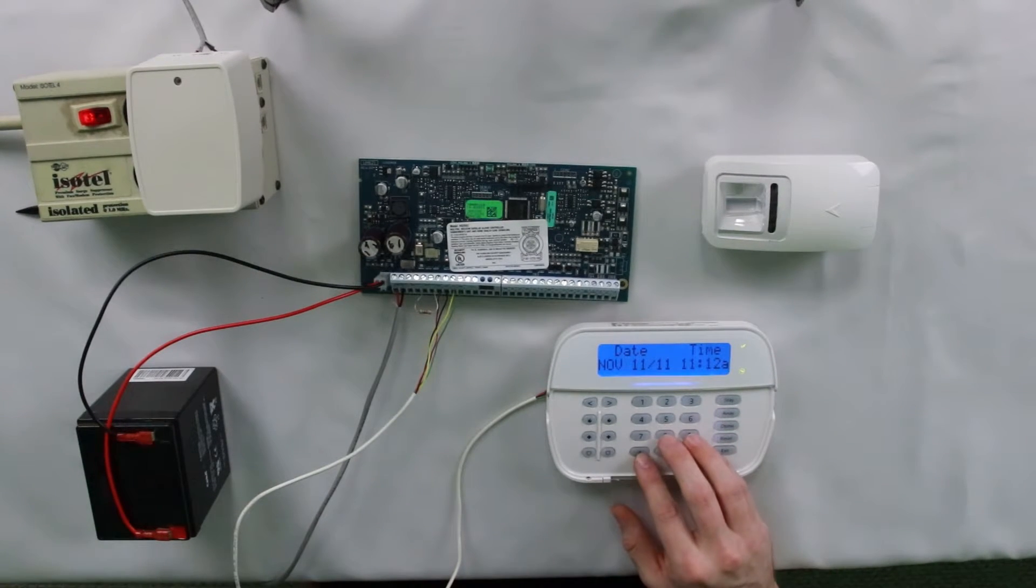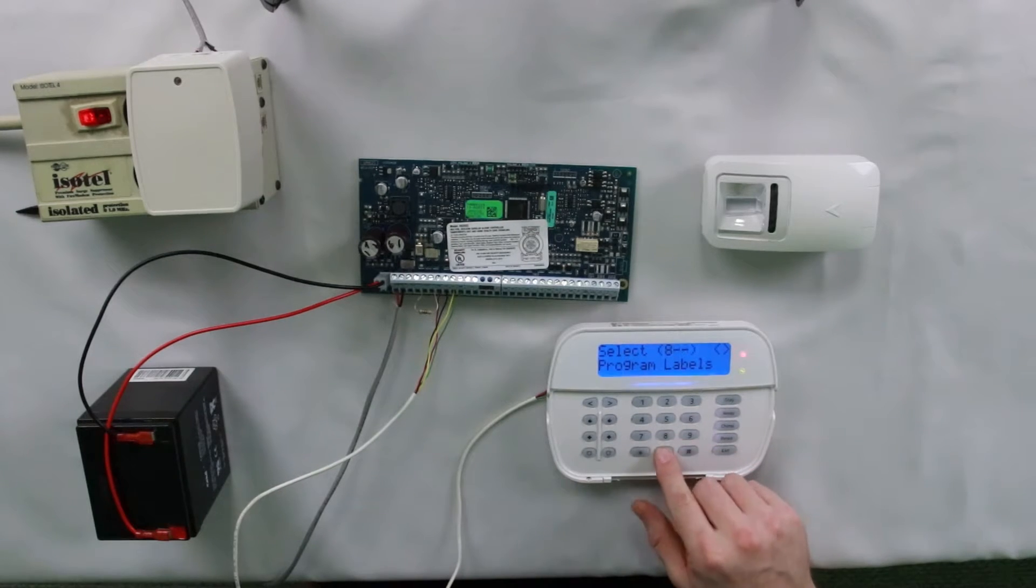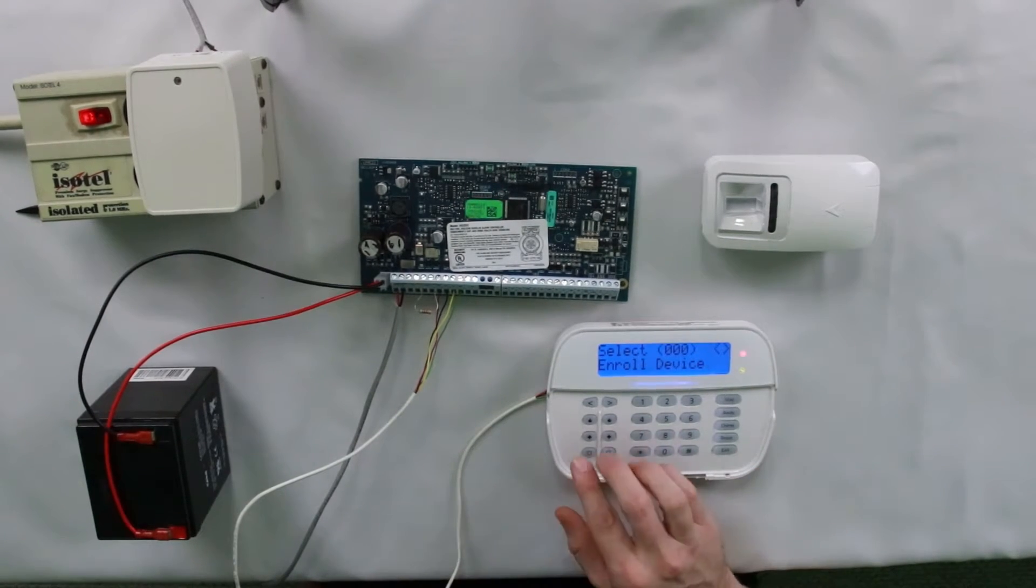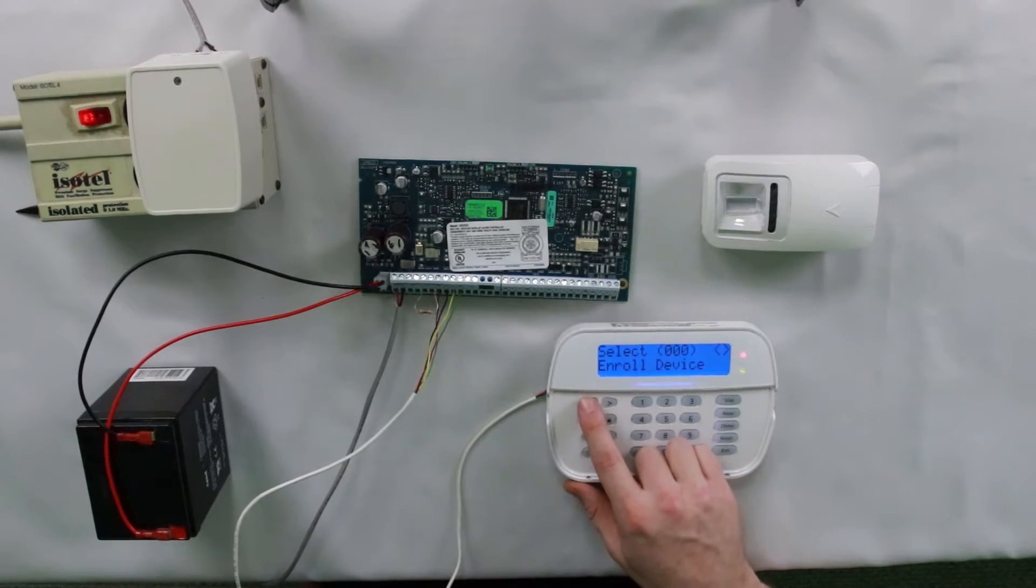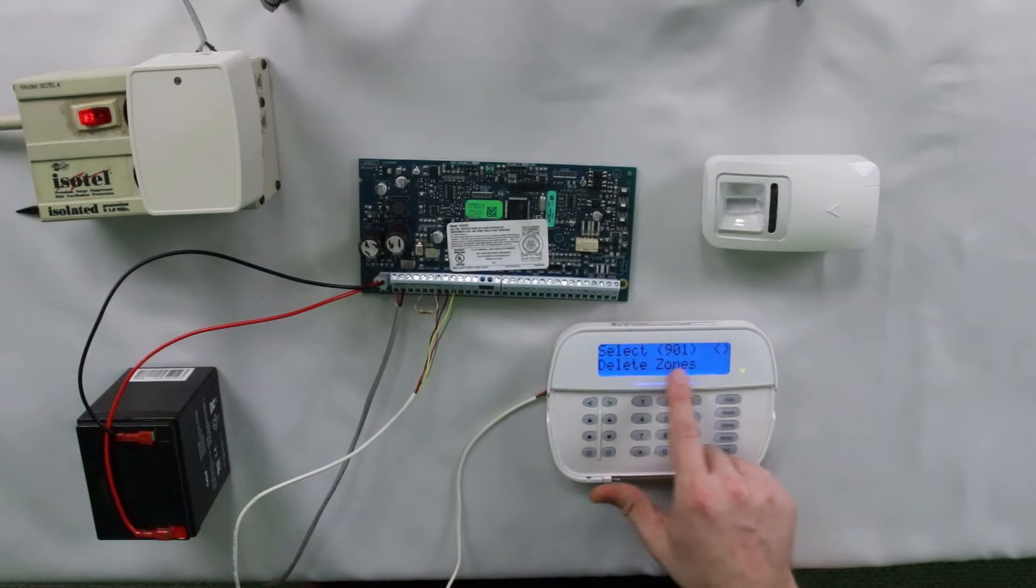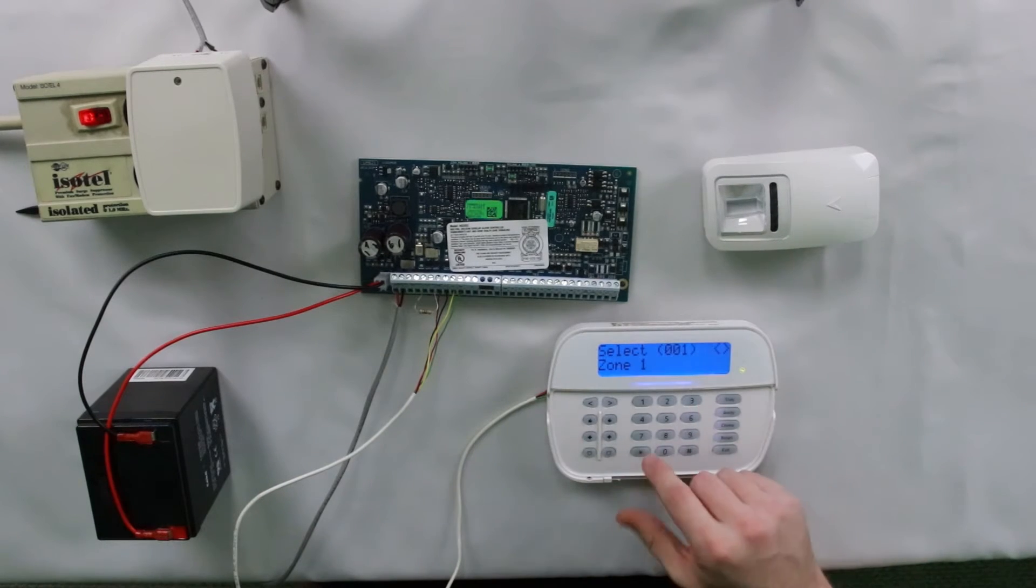So if that is the case, go into your programming by hitting star 8 followed by your installer code. The default is 5555. Go to section 804. When you see select 000 enroll device, start using the left arrow key to scroll left. We need to go to section 901. So 901, delete zones. Hit star on that. Select the zone that is showing the trouble. For us, it is zone 1.